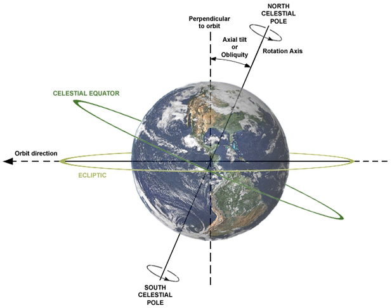In astronomy, axial tilt, also known as obliquity, is the angle between an object's rotational axis and its orbital axis, or equivalently, the angle between its equatorial plane and orbital plane.